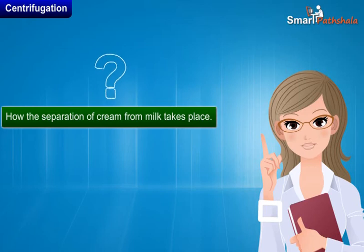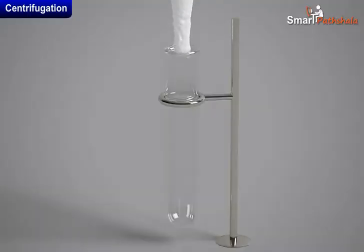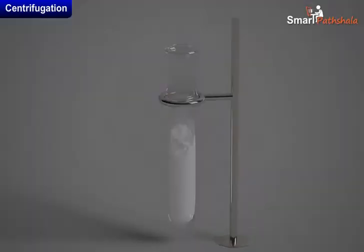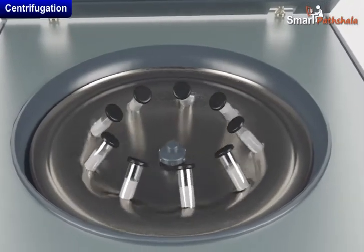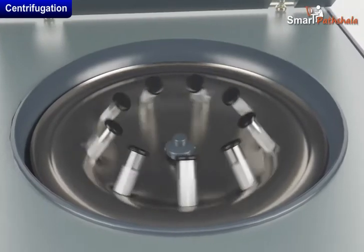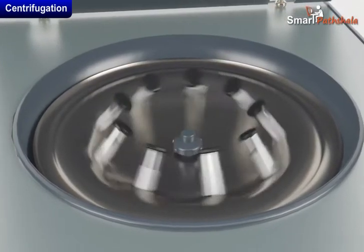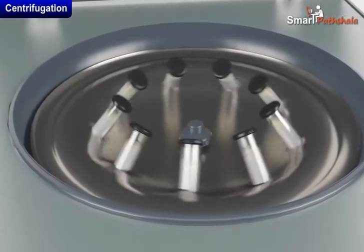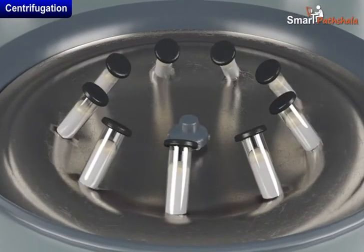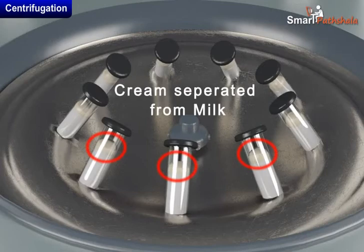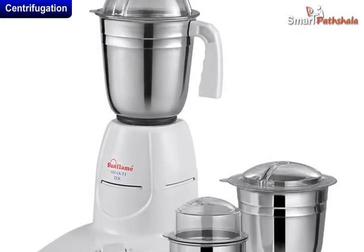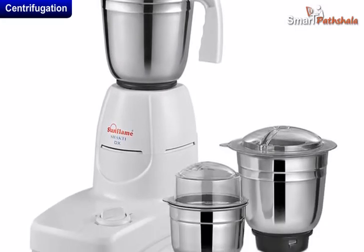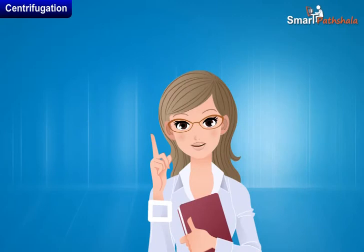How does the separation of cream from milk take place? In this activity, we take fresh milk in a centrifugation machine, where the milk is rotated at high speed. The cream collects in the center and the outlet settles down. This method can also be replicated at home using a mixer grinder when a centrifugation machine is absent.